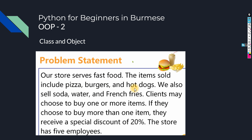Fast food problem statement: Our store serves fast food. The items sold include pizza, burgers, and hot dogs. We also sell soda water and french fries. Clients may choose to buy one or more items. If they choose to buy more than one item, they receive a special discount of twenty percent. The store has five employees.